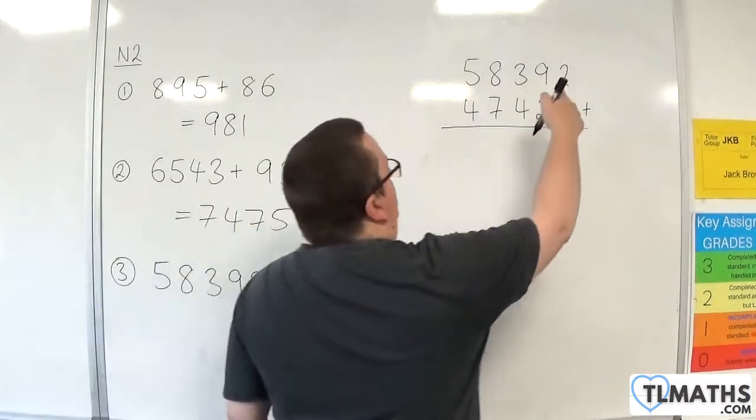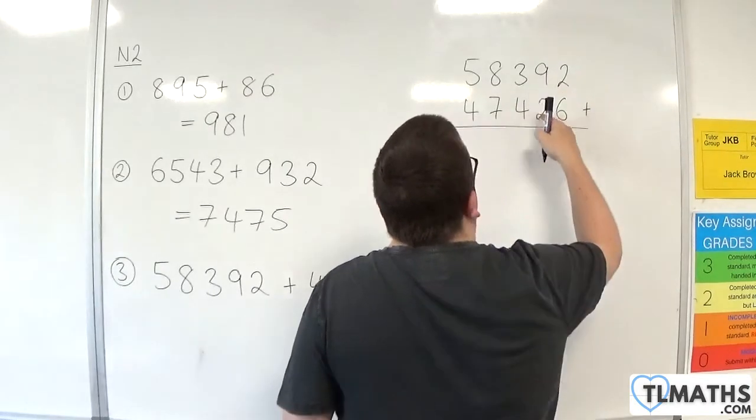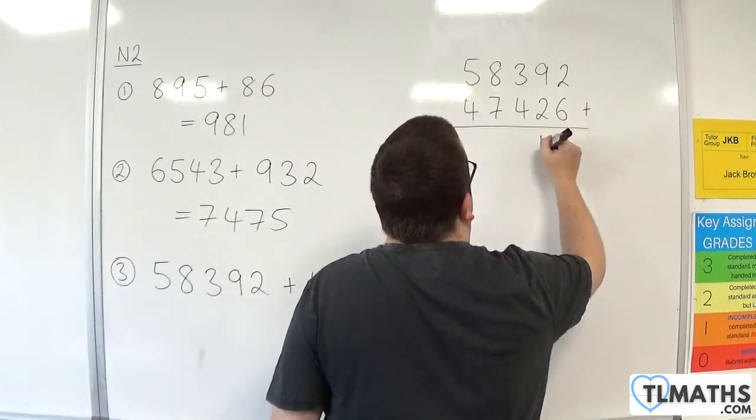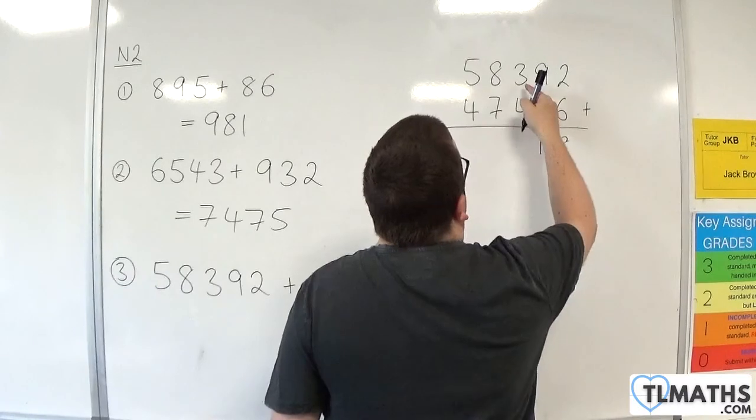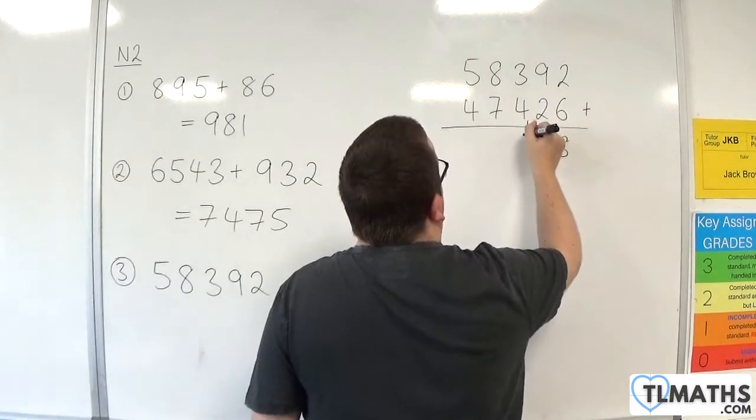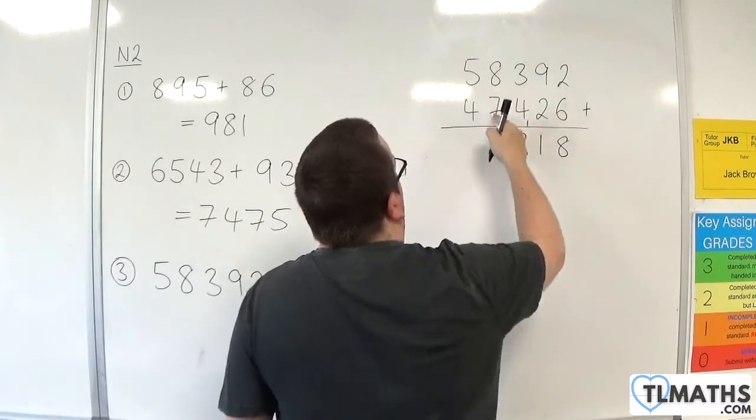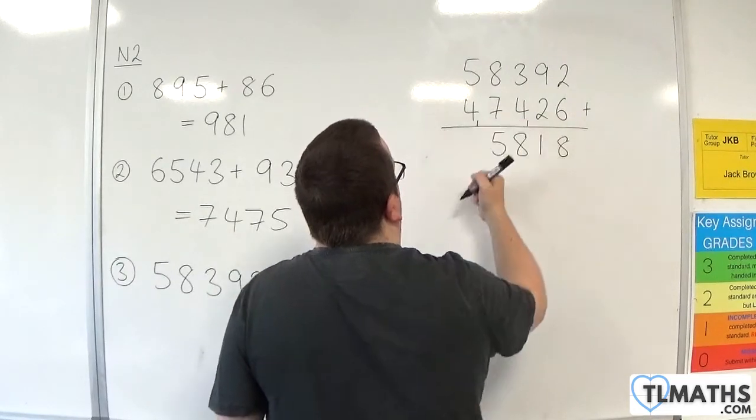So we have 2 plus 6 is 8. 9 plus 2 is 11, so 1, carry the 1. 3 plus 4 is 7, plus the 1 is 8. 8 plus 7 is 15, so write the 5, carry the 1.